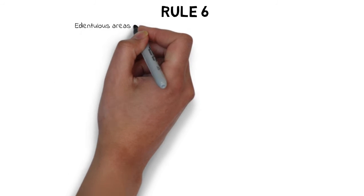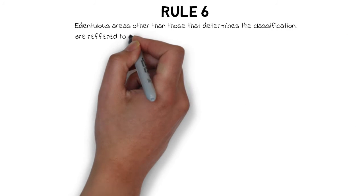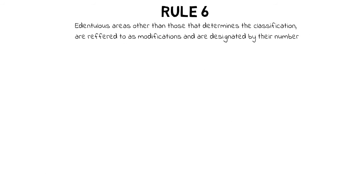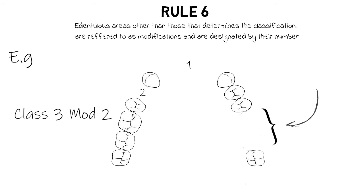Rule 6 explains the modification system. The edentulous areas other than those that determine the classification are referred to as modifications and are designated by their numbers. For example, a case with two additional edentulous areas beyond the one determining the classification would be classified as Class 3 modification 2. The determining edentulous area is not counted as a modification; only the remaining edentulous areas are called modifications.